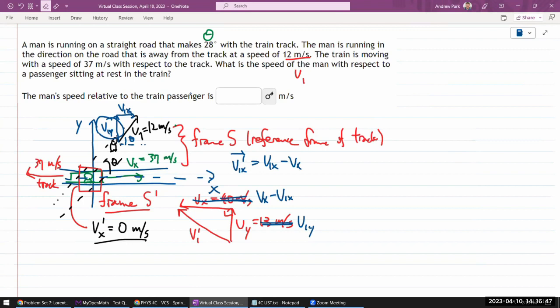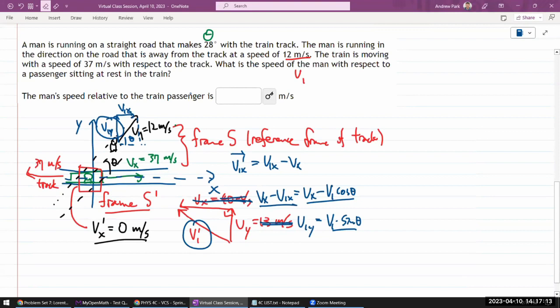So yeah, and the algebraic expressions for these are relatively simple. So, if this is theta, then the y component is the magnitude v_1 times sine theta. It's the same as this opposite side. And v_1x, that's v_1 times cosine theta. So, this whole expression will be v_x, the number we have, minus v_1 cosine theta.